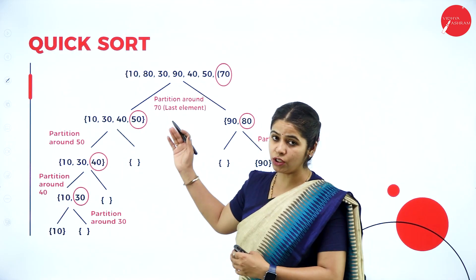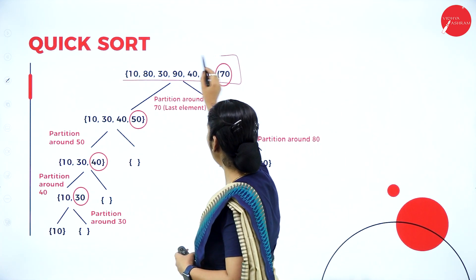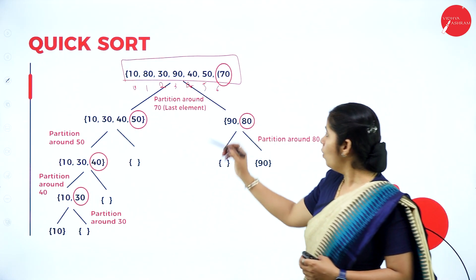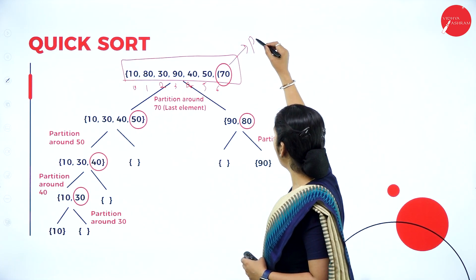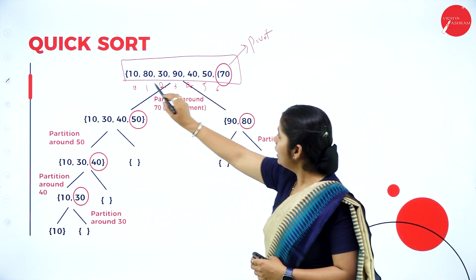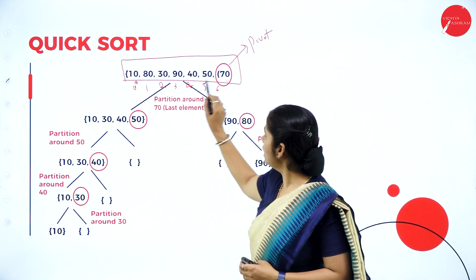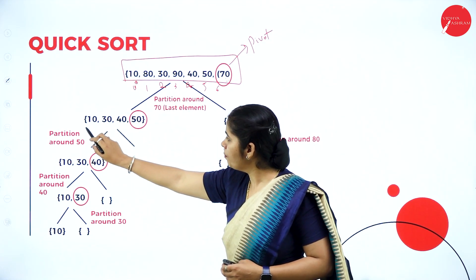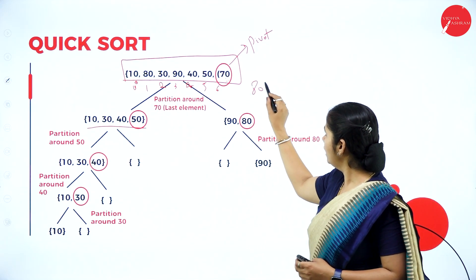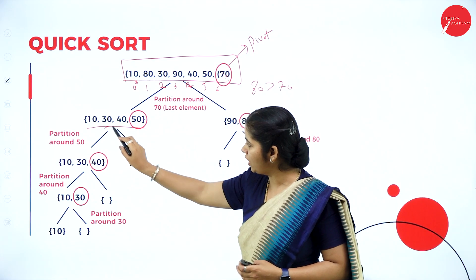Let us see the procedure of how quick sort exactly works with an example. Here I have an array of 7 elements, indexed 0 through 6. We are taking the last element as the pivot element. We compare the value of the array with the pivot element: whichever is smaller goes to the left part and whichever is greater goes to the right part. For example, 10 is lesser than 70, so put it in the left part. 80 is greater than 70, so put it in the right part. 30 is smaller than 70, put it in the left. 90 is greater than 70, put it in the right.